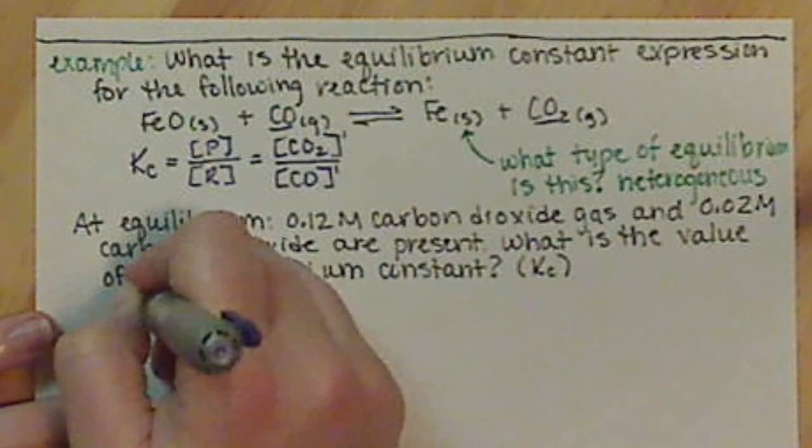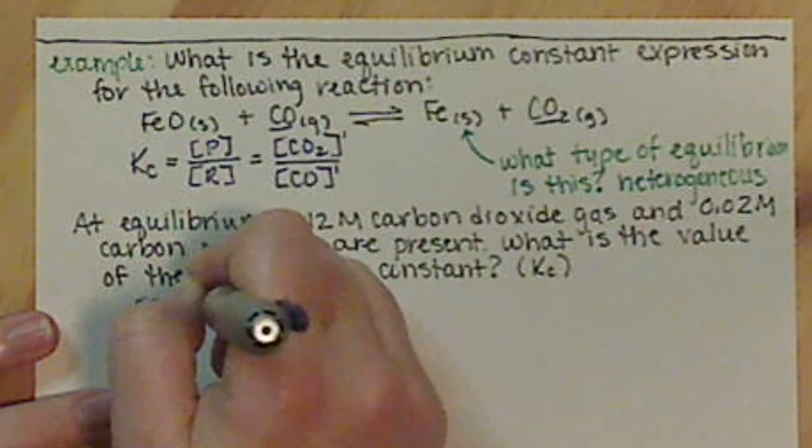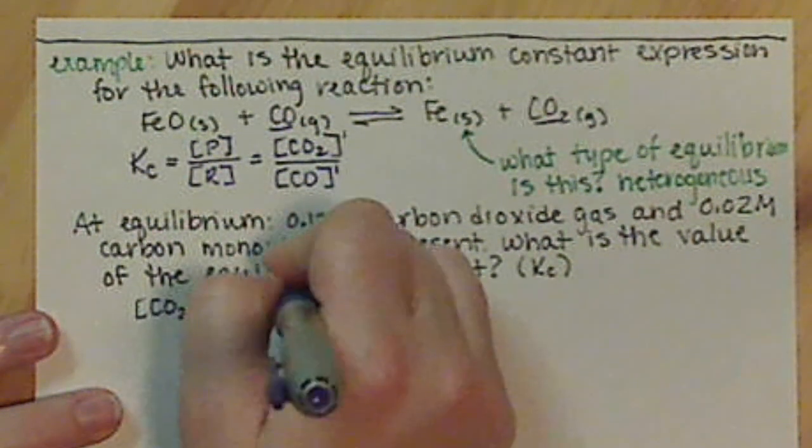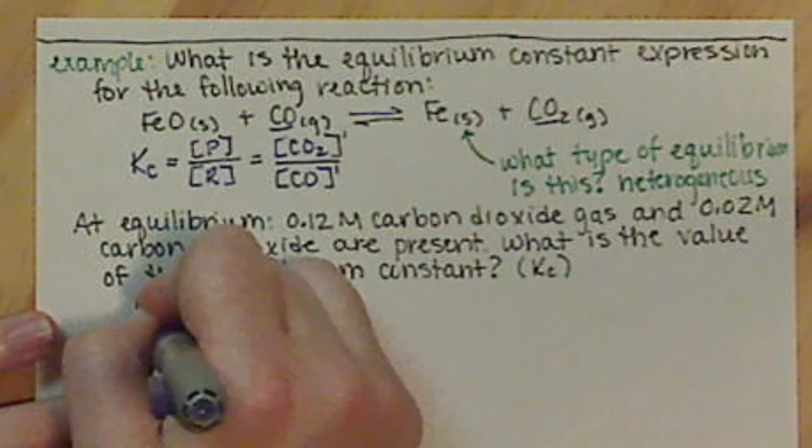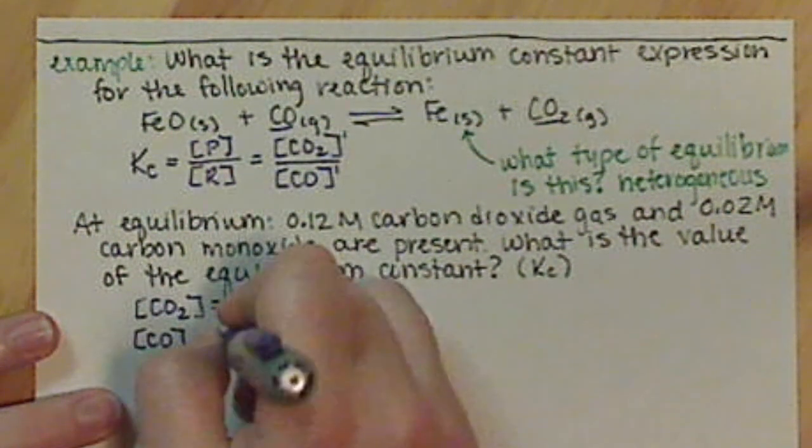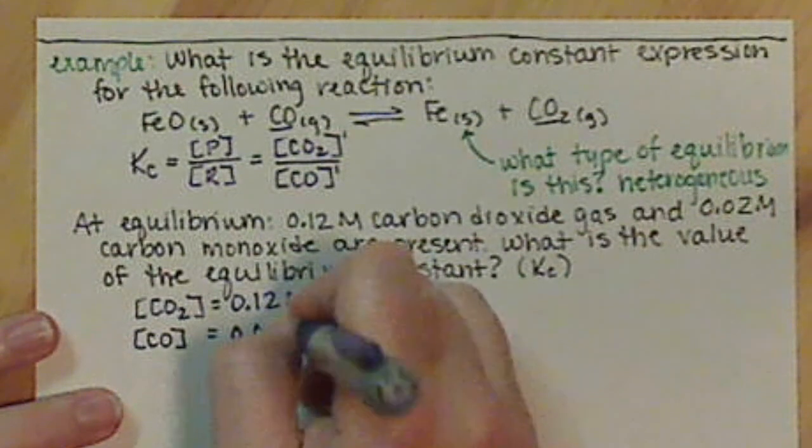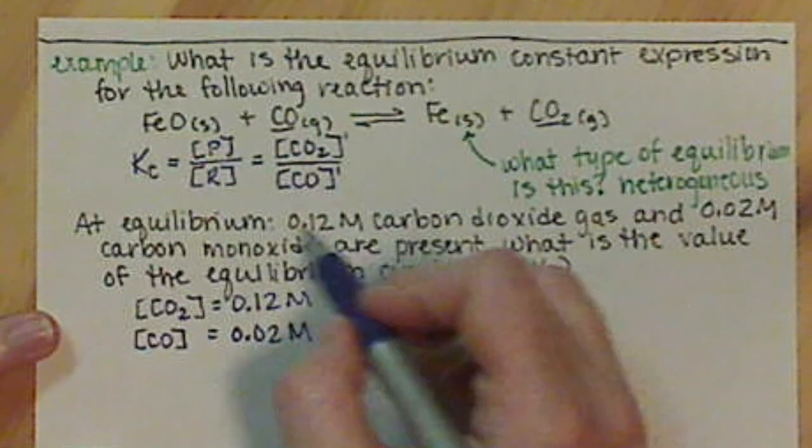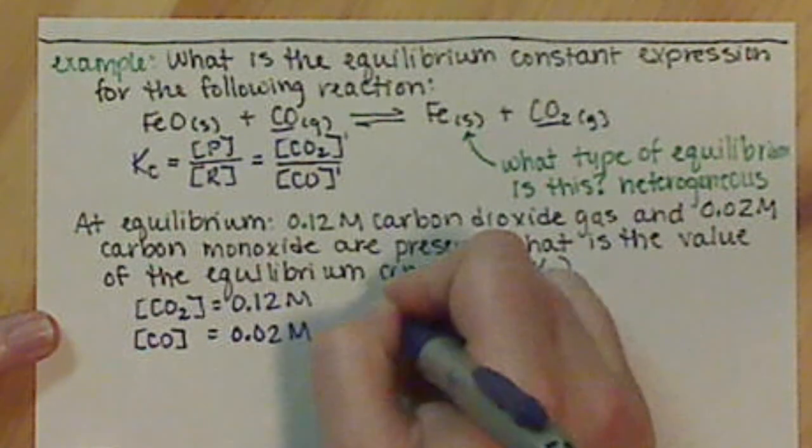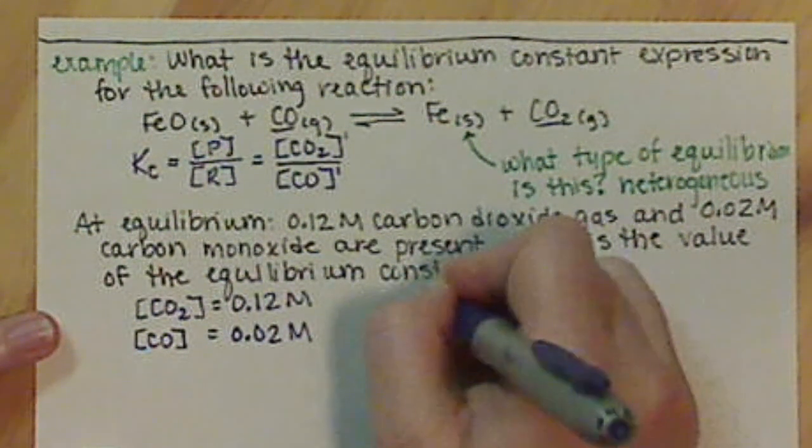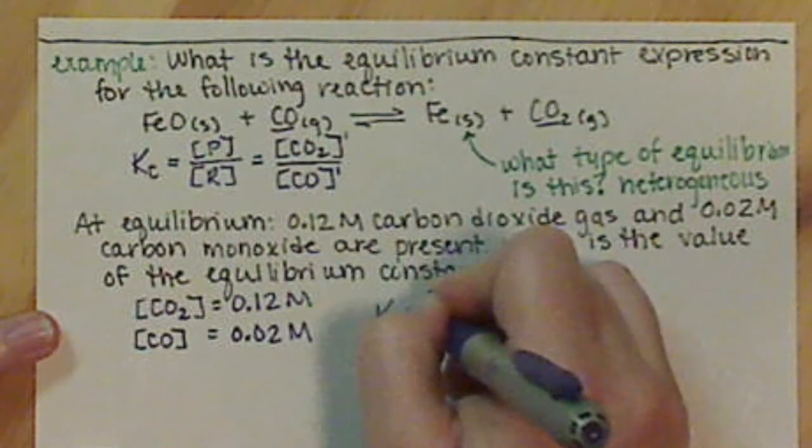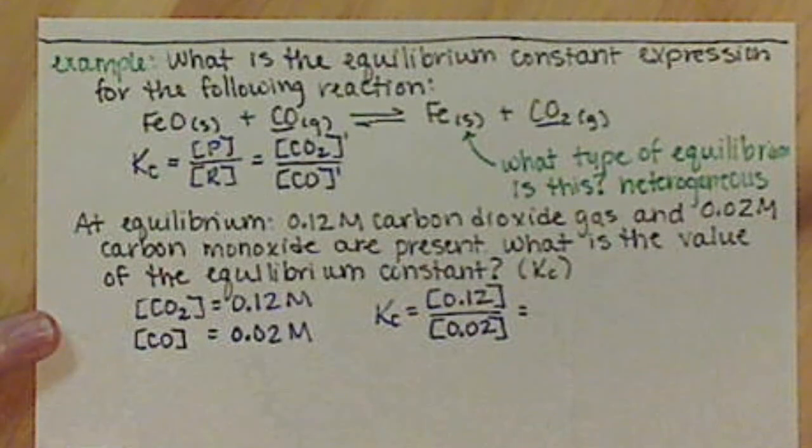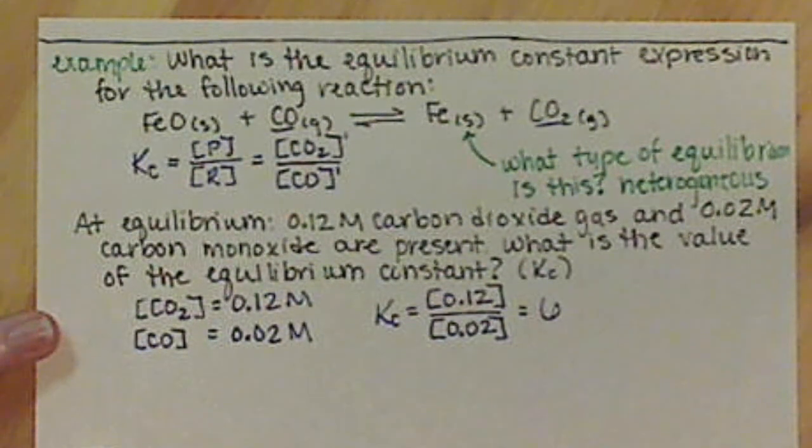So we want to know what is the value of Kc for this reaction given these equilibrium concentrations. So basically what it's telling us is we have our concentration of CO2, carbon dioxide, is 0.12 molar. So if we use our Kc expression that we derived up here, we have Kc is equal to 0.12 divided by 0.02, and this is going to equal 6.